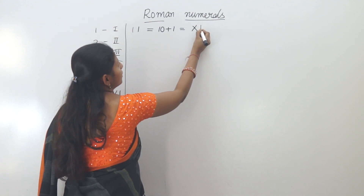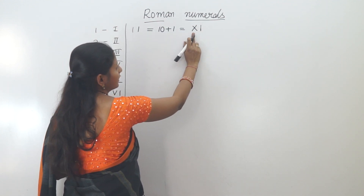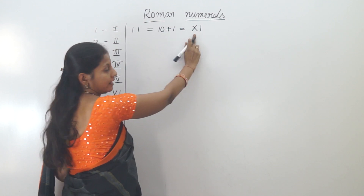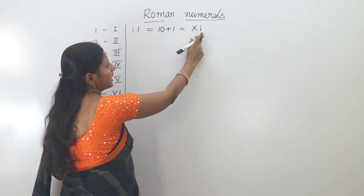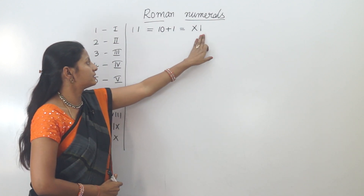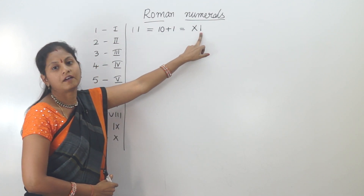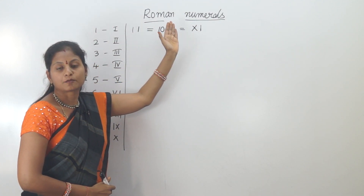To form the number 11, we take X (which is 10) and place I to the right side. Adding I to the right of X gives us 10 plus 1, which equals 11. The right side adds, and the left side subtracts.